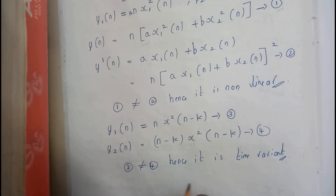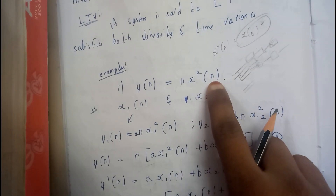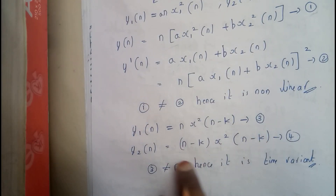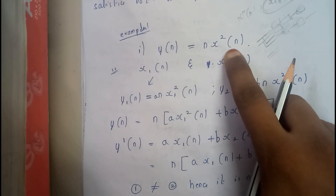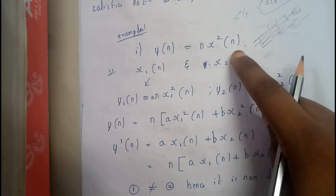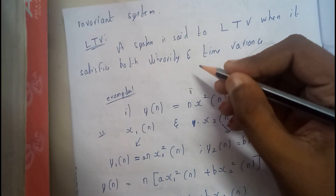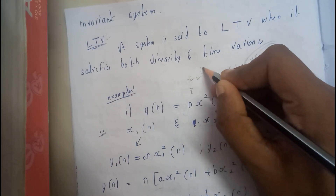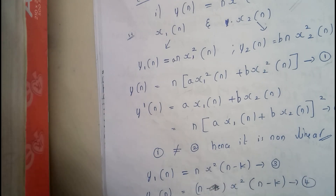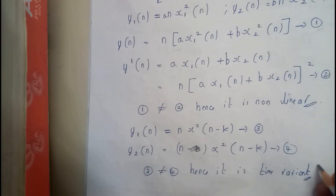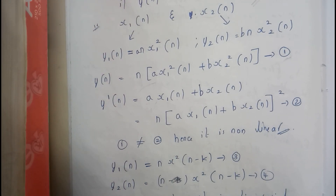Now let us check whether the system is time variant or time invariant. Initially, directly substitute n minus k in place of n. This gives our first equation. In the second equation, we delay the function first and then substitute the value. If we delay the function, we get X2(n − k), and when we substitute it, both expressions match. So it is a time invariant system — it is not depending on time. Hence this is a nonlinear time invariant system.